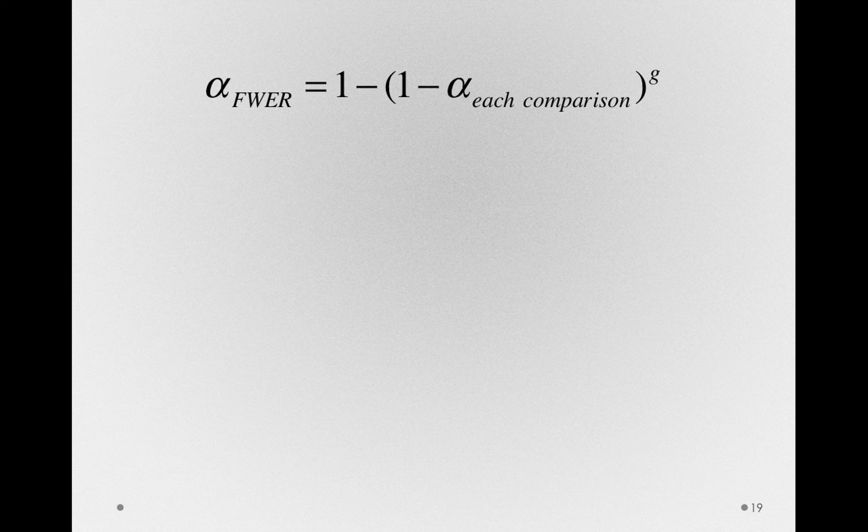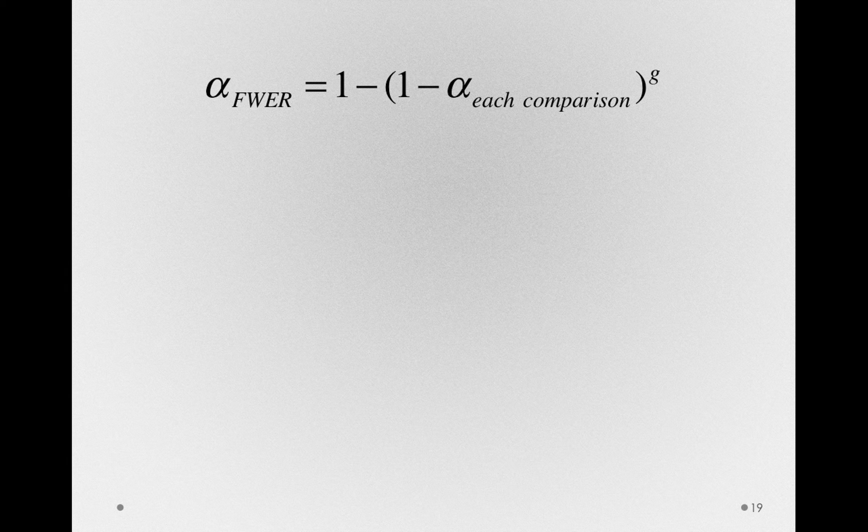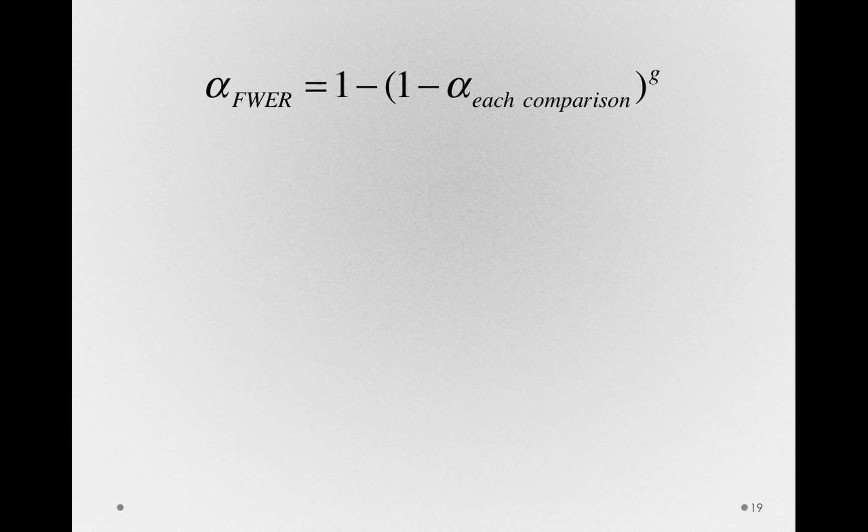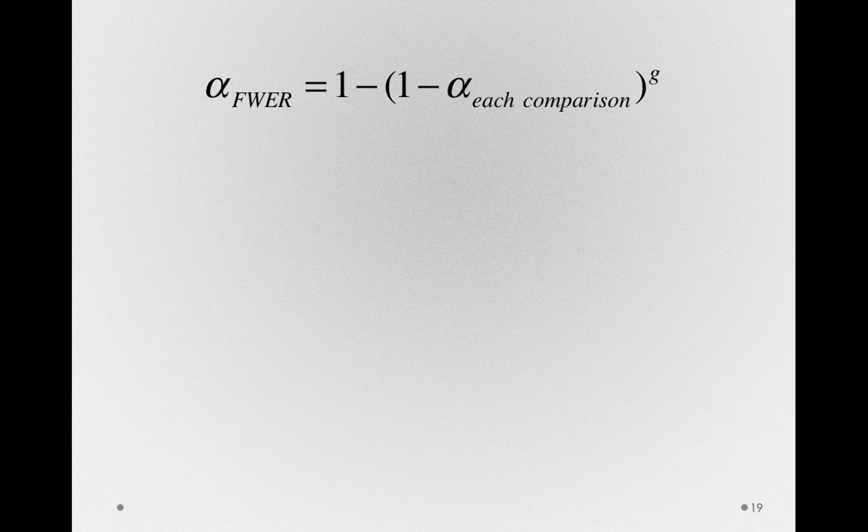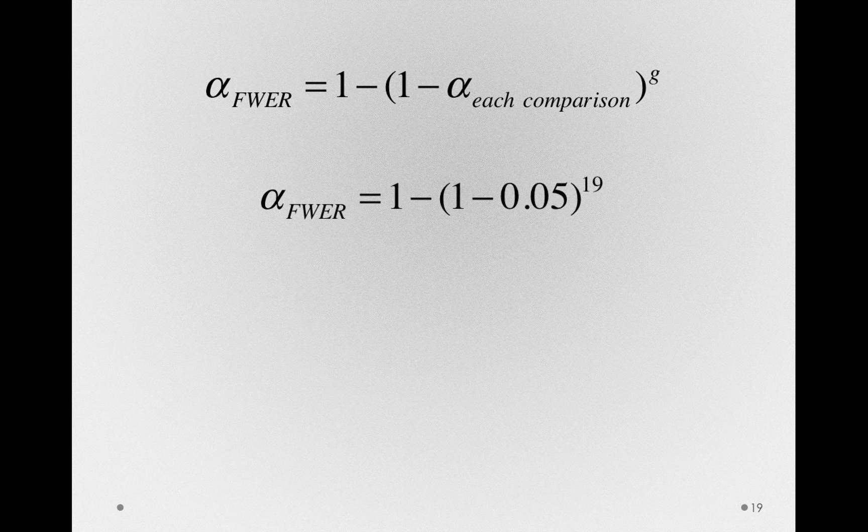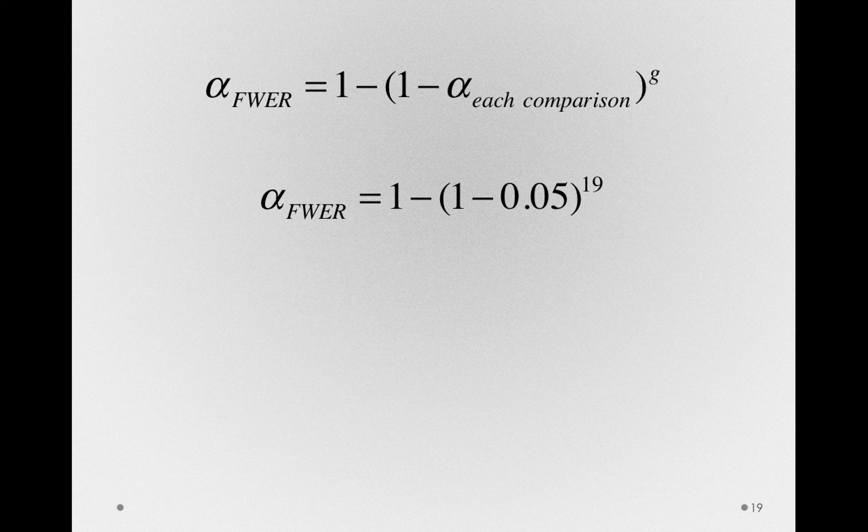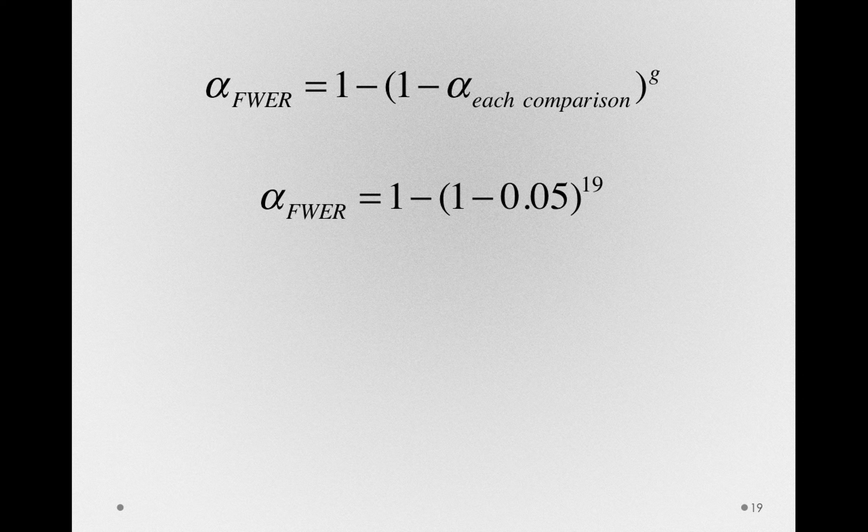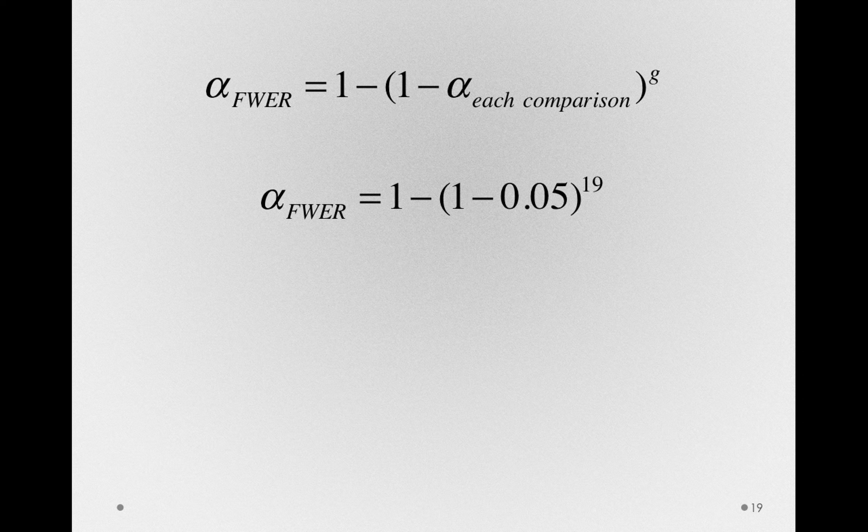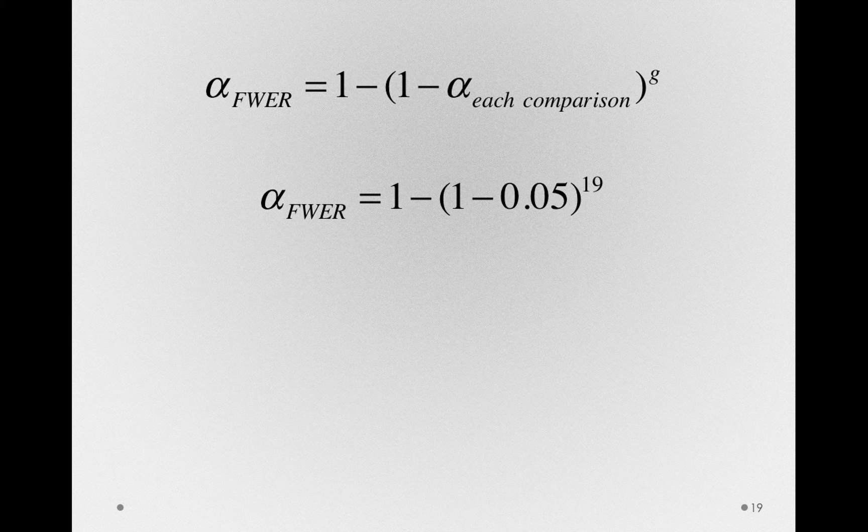What's the probability over 19 comparisons that we'll make a false alarm, assuming the null hypothesis is true? Well, the way we would compute this is, the alpha for the family is equal to 1 minus 1 minus 0.05, that interior portion is the probability of not false alarming, raised to the 19th power.